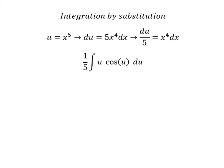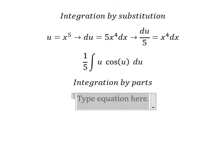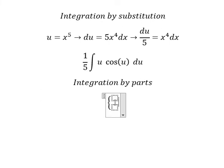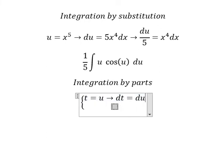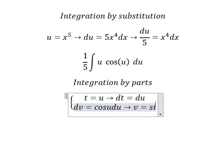Next we need to use integration by parts. We have t equals u, dt equals du, dv equals cosine u du, and v equals sine u.